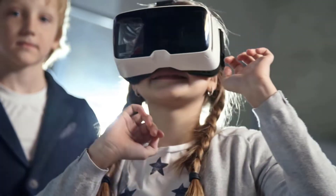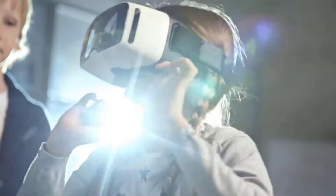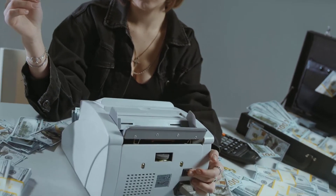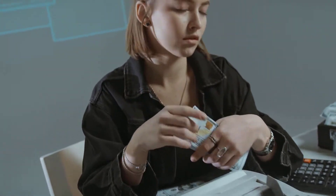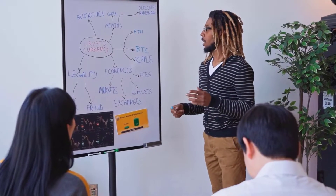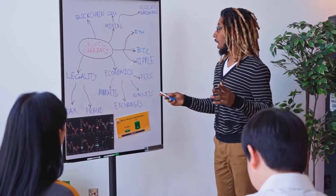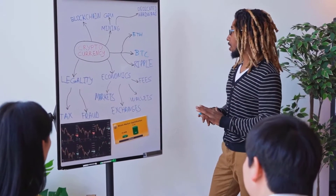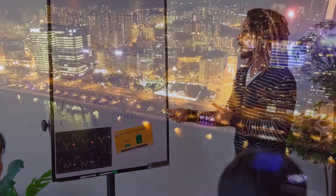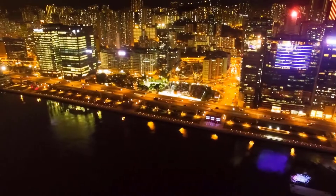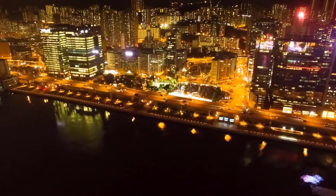What is Algorand? Algorand is the local digital money of the Algorand environment. It is an open-source decentralized blockchain in light of shrewd agreements. ALGO was sent off in 2019. Like Ethereum, Algorand possesses its local Algorand virtual machine, and its smart contracts empower clients to create different dApps on the blockchain.